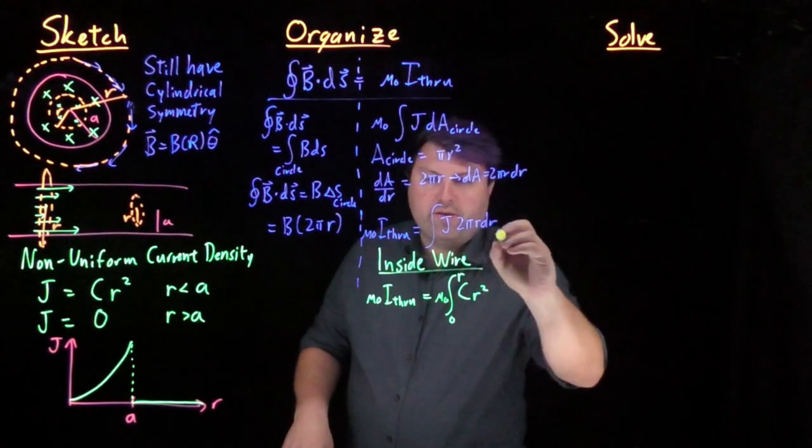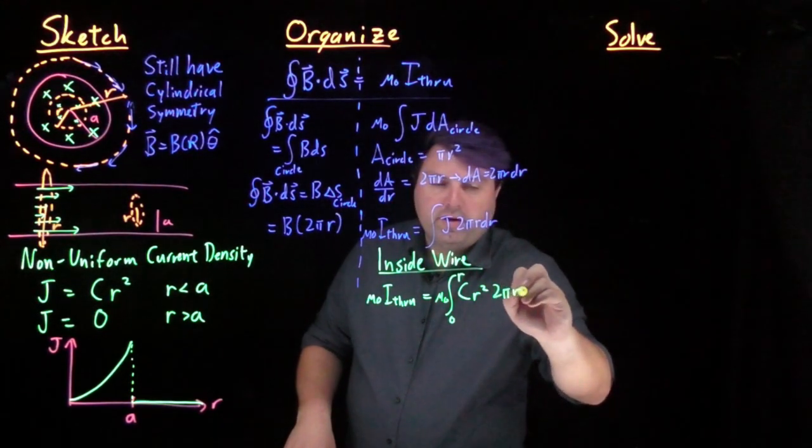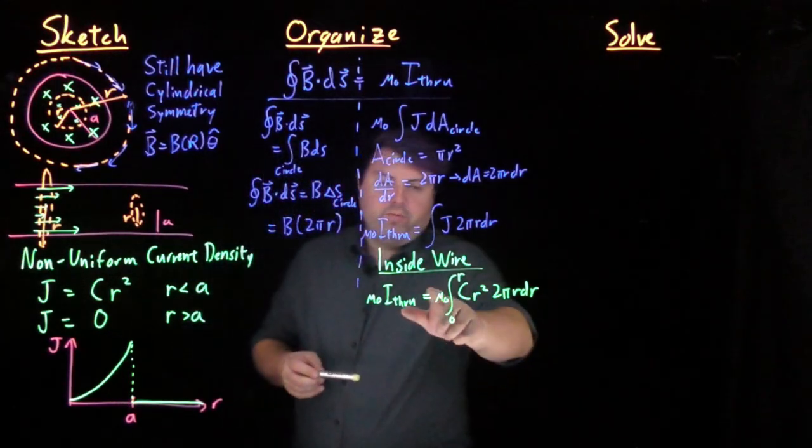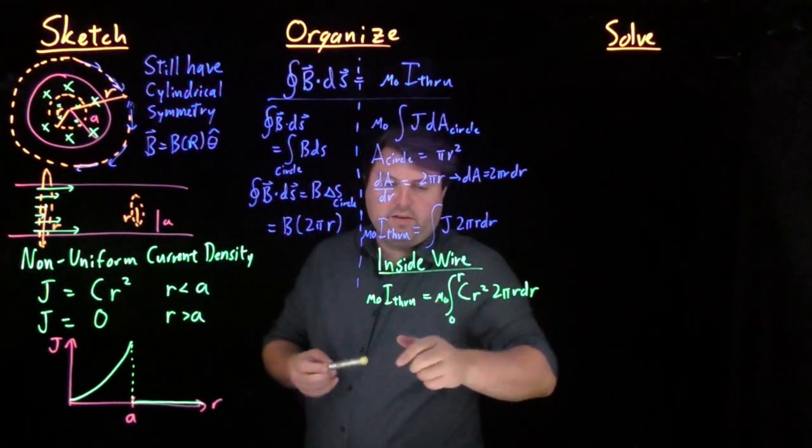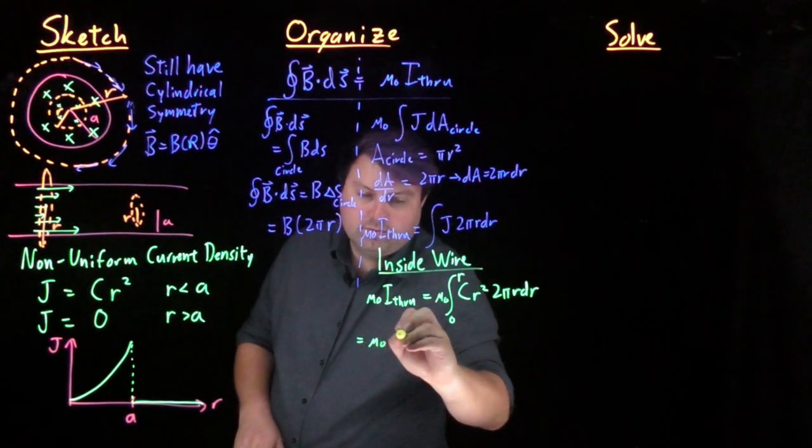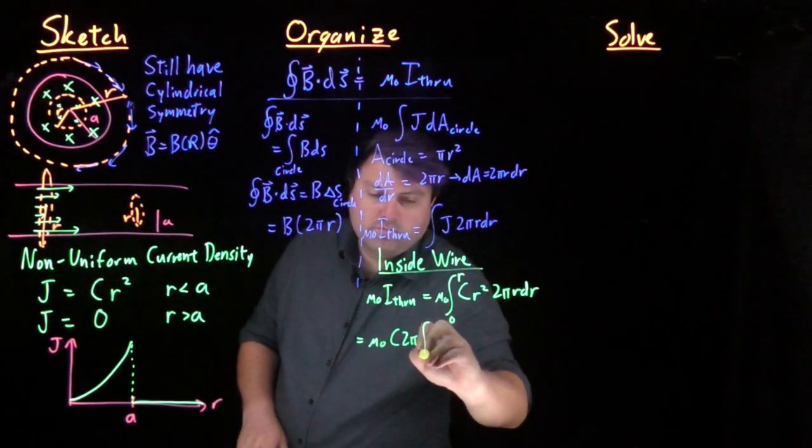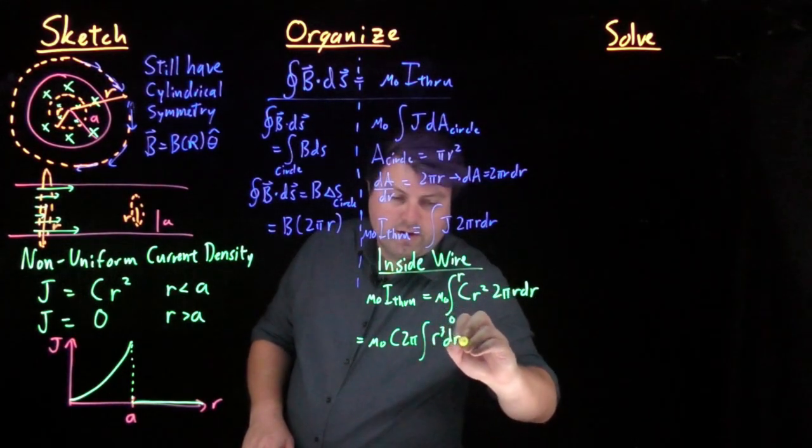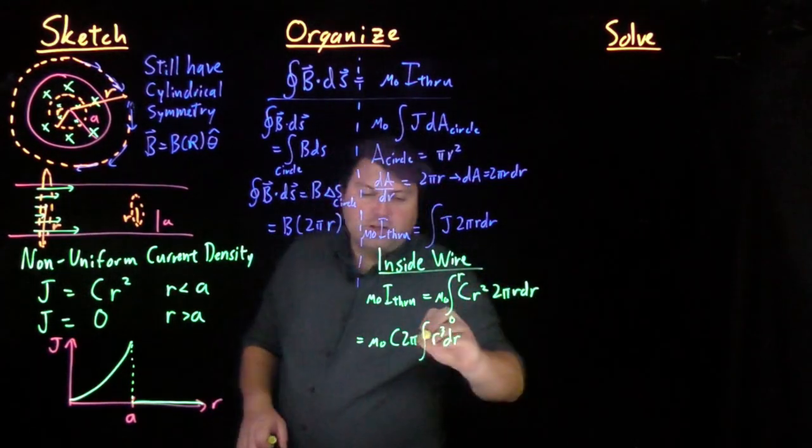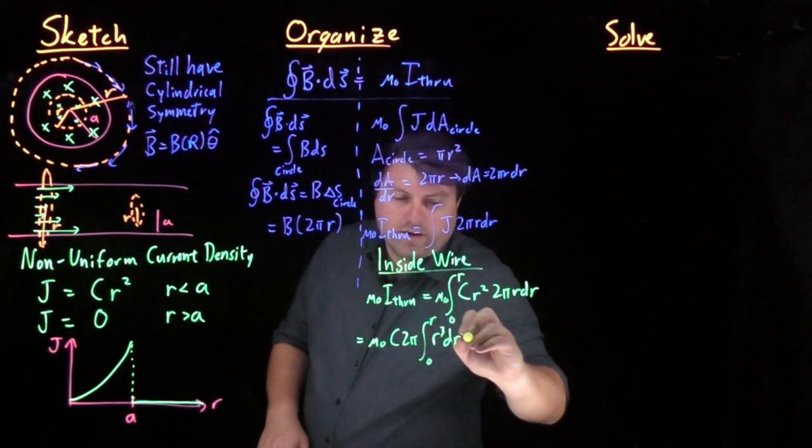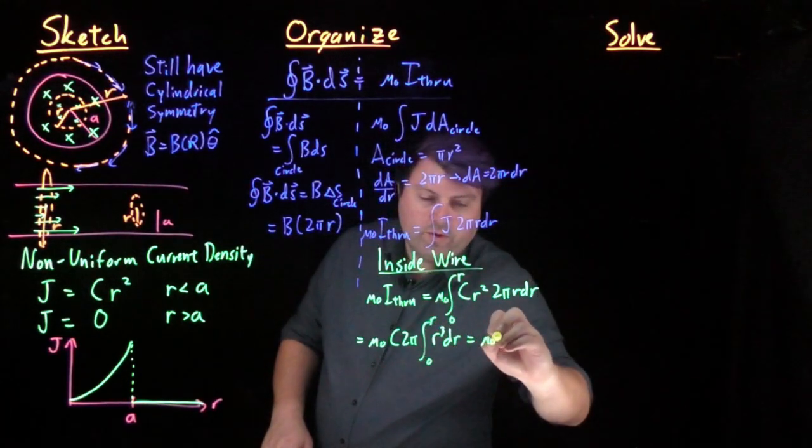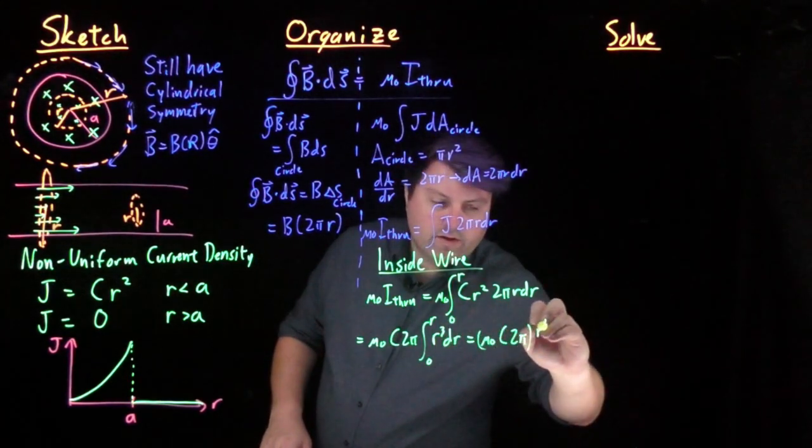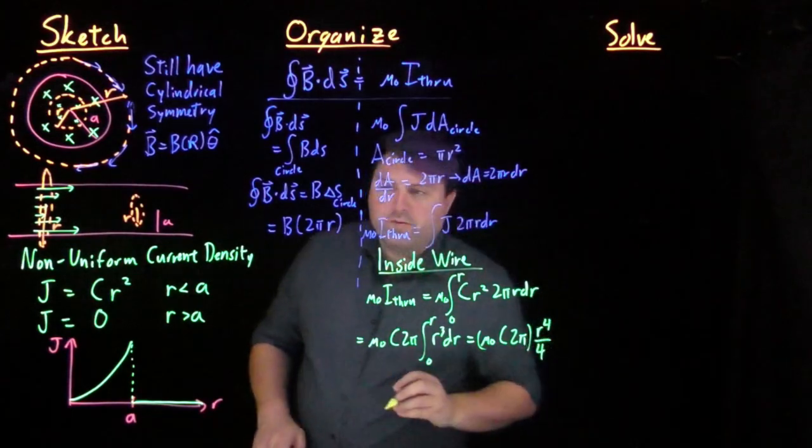We'll have our mu naught out front, and then we have our dA, 2 pi r dr. So we can pull mu naught c and 2 pi out of the integral, and we're left with r squared times r, which is r to the third dr, from again 0 to r. So we will get mu naught c times 2 pi, all times r to the fourth over 4.